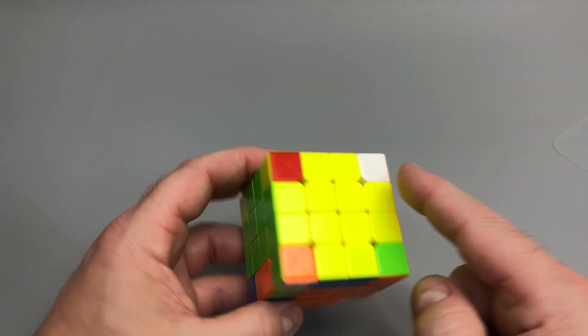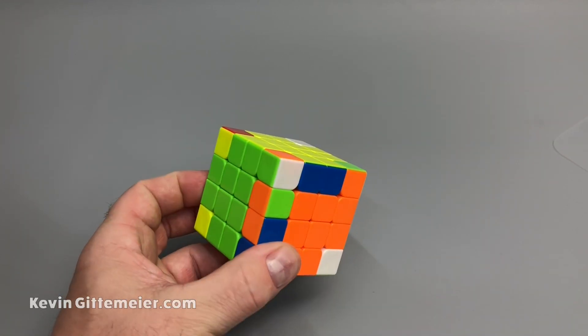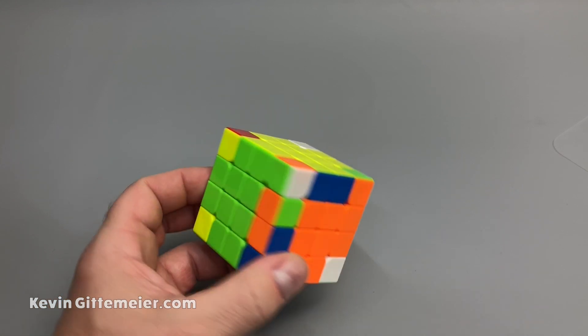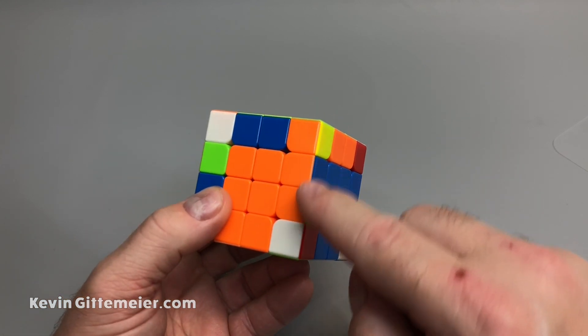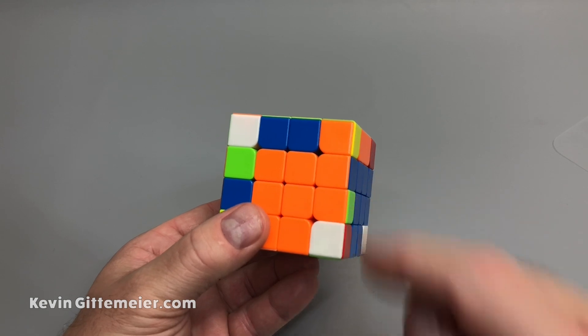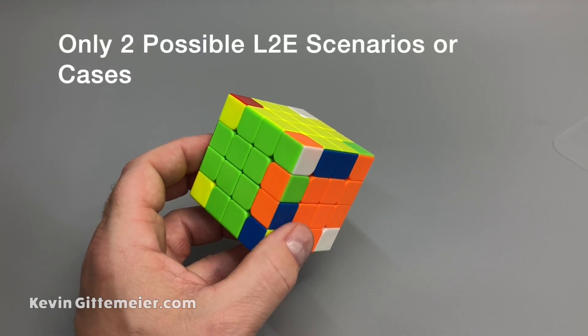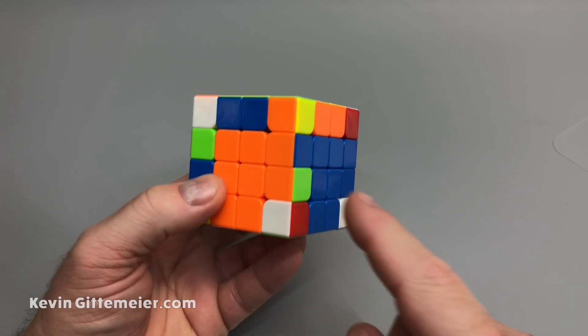Okay, we've got all our edges paired up except for the last two. We're down to the last two edge pairs, or last two edges. For the purpose of this video, I'm going to call these edge pairs, and the individual edges wings.